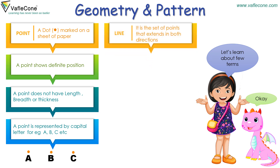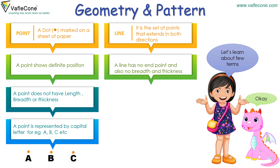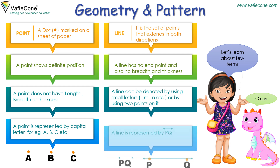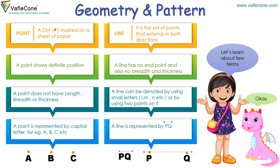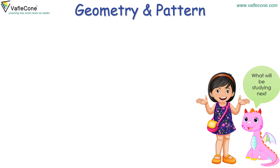Line: it is the set of points that extend in both directions. A line has no end point and also no breadth and thickness. A line can be denoted by using small letters L, M, N, etc., or by using two points on it — a line is represented by P, Q. Do remember, we can extend a line to any length as it does not have any fixed length.